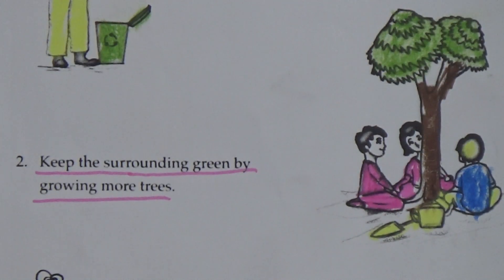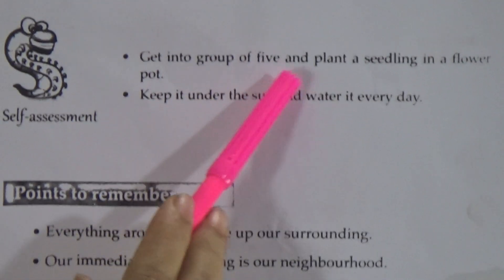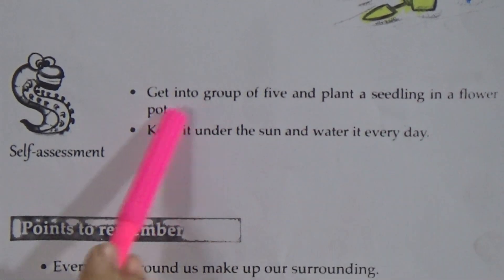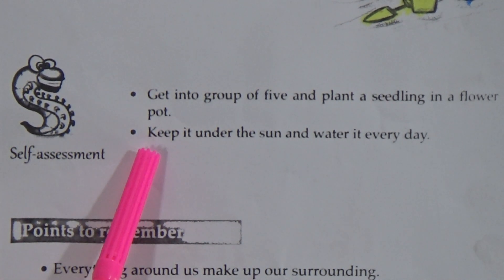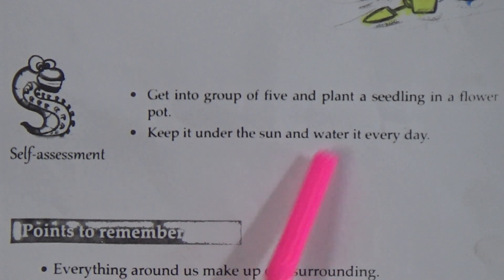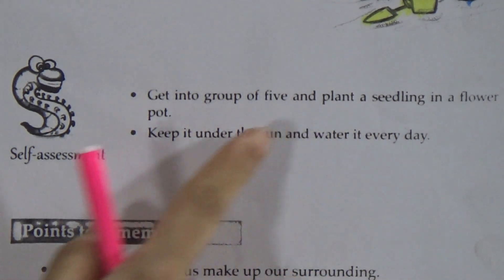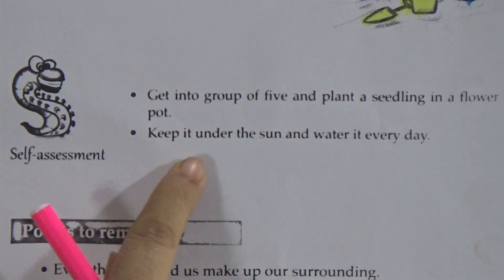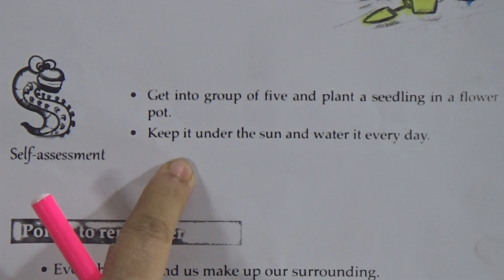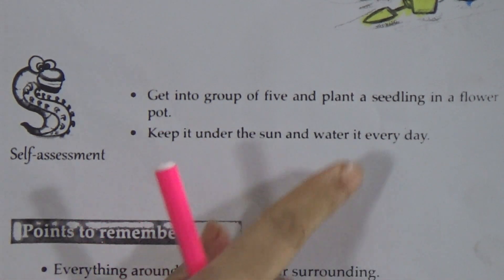Now there is a self-assessment activity. Get into a group of five and plant a seedling in a flower pot — you can do it at your home. Keep it under the sun and water it every day. Take a flower pot, plant a flowering tree, keep it in the sun, and water it every day.